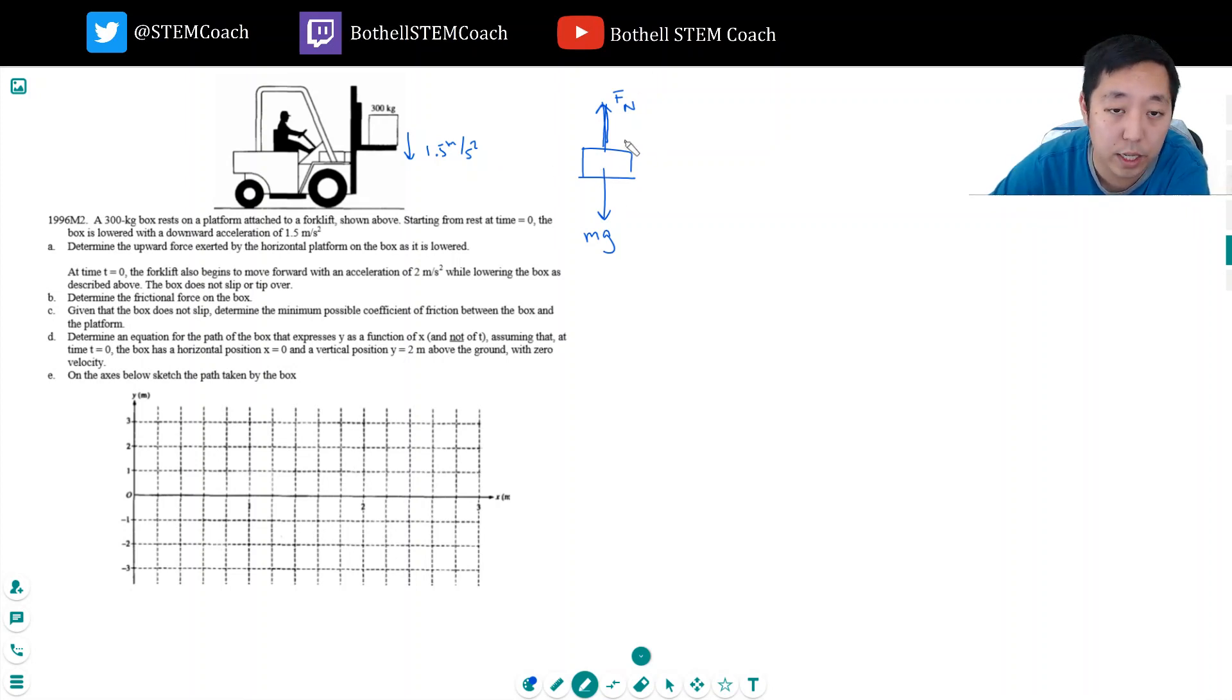Now in this case, because it's accelerated downward, I'm going to say downward is positive. So the net force equation is mg minus the normal force equals ma. I'm going to assume you know g is 10 meters per second squared. That's just simpler.